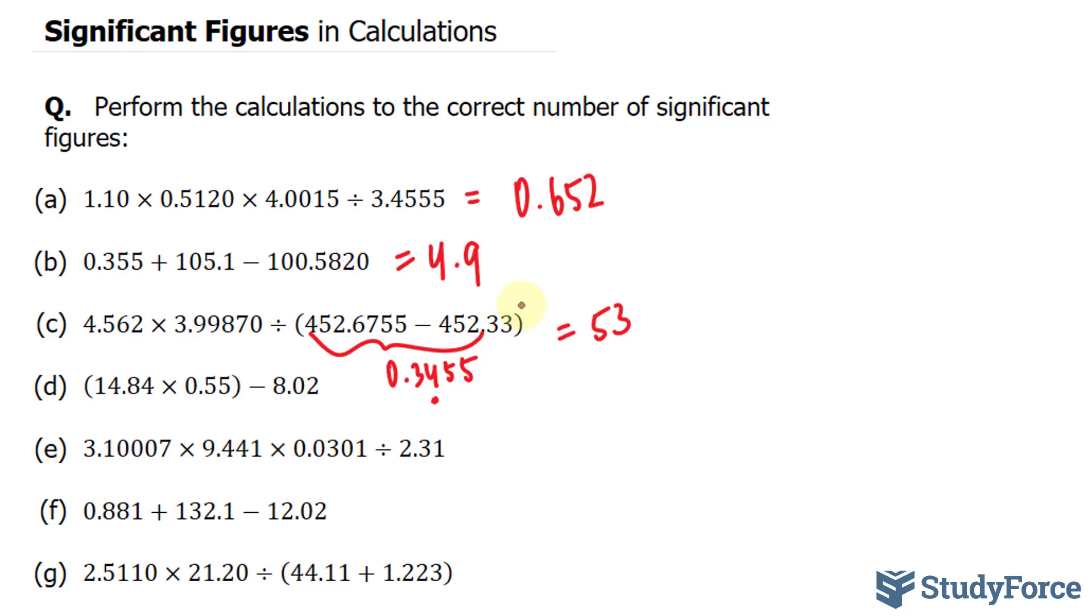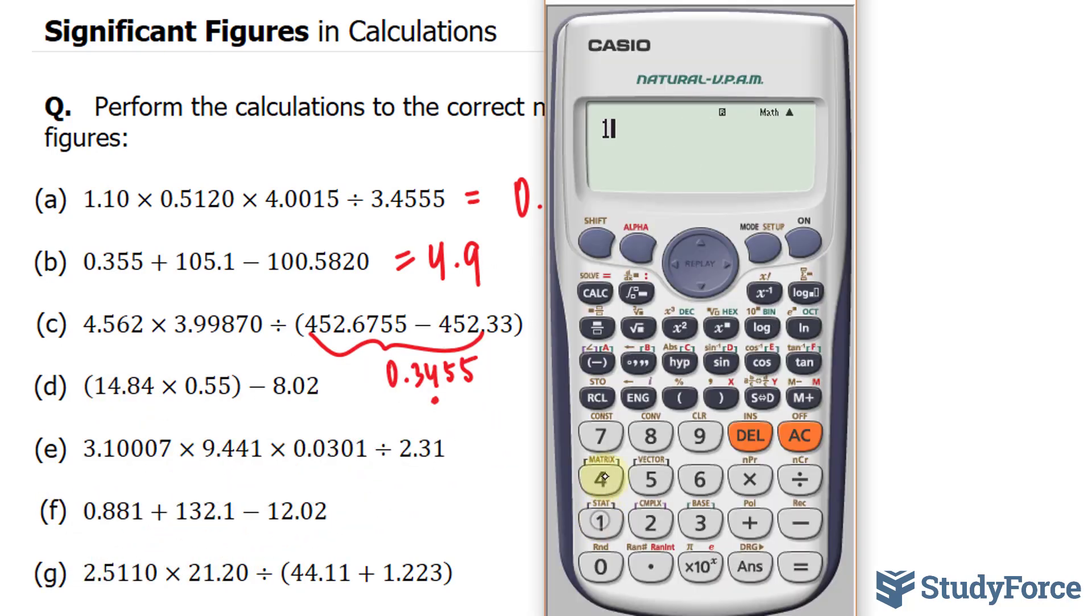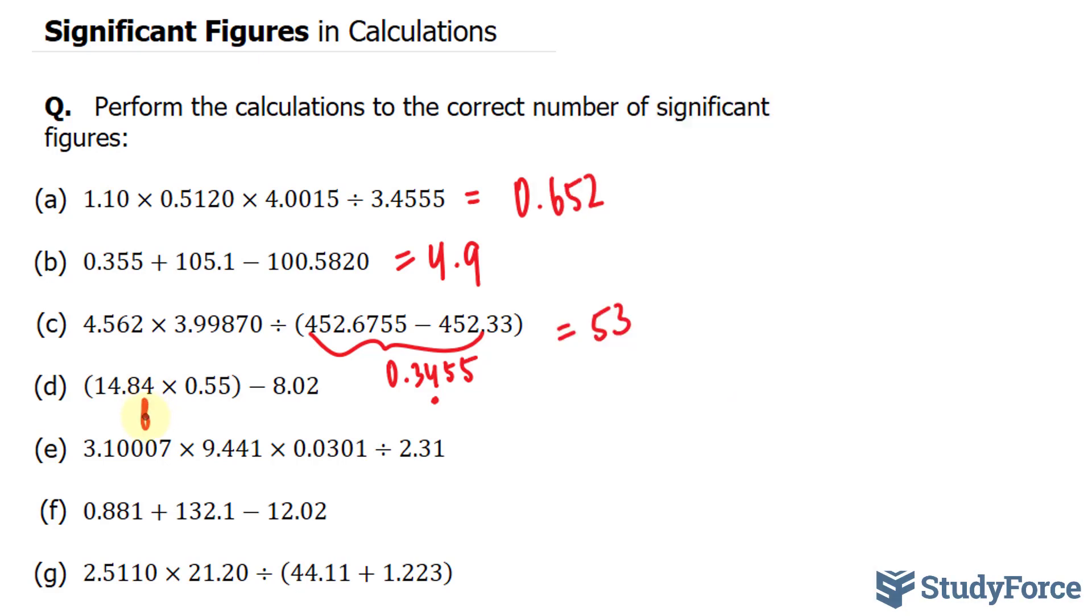Let's try D. Here we have to multiply 14.84 times 0.55 minus this. We'll find out what this is equal to first. And we should end up with a number that is two significant figures. 14.84 times 0.55 gives us 8.162. And since this has to have two significant figures, I'll put a dot right here to reflect that.